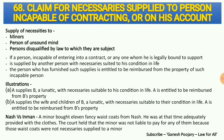Section 68 discusses the claim for necessaries supplied to a person incapable of contracting, or on his account. While discussing the essentials of contract, we understood that a person must be capable of contracting. But some persons are not — for example, minors, persons of unsound mind, or persons disqualified by law — all of them are incapable of contracting.